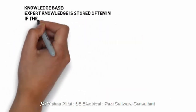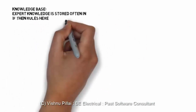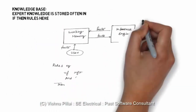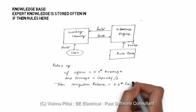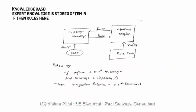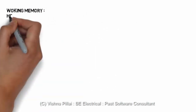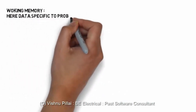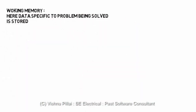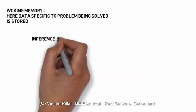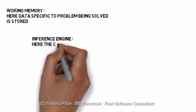The knowledge base stores expert knowledge, often in the form of rules. Normal knowledge available in books or websites like Wikipedia cannot be easily understood by computers, so it is converted into rules. For example: if inflow is greater than a certain amount, then there could be a discharge of a certain amount of water — as in a water tank control system. The working memory stores data specific to the problem being solved.